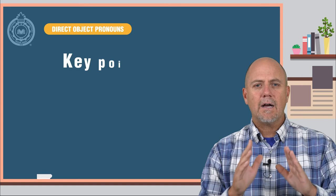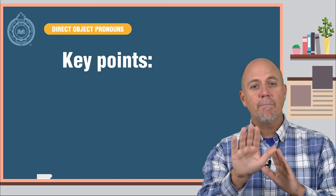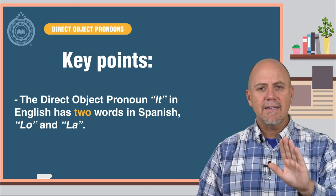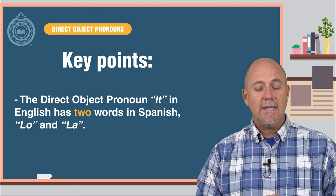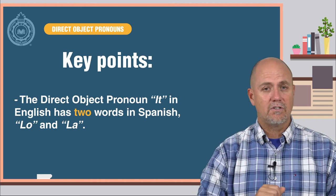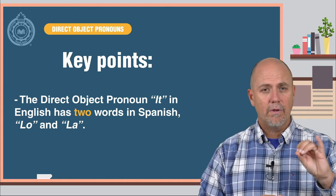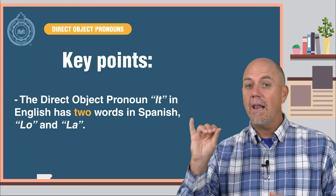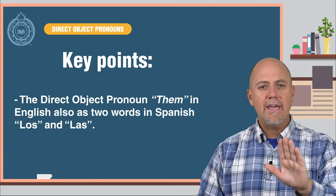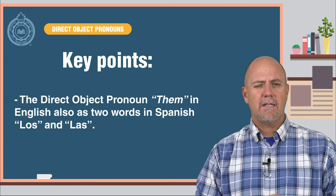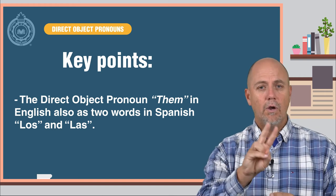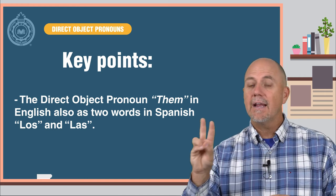A couple of very key points. The direct object pronoun 'it' in English has two words in Spanish: lo and la. The direct object pronoun 'them' in English also has two words in Spanish: los and las.